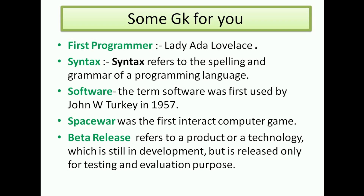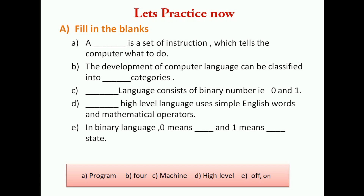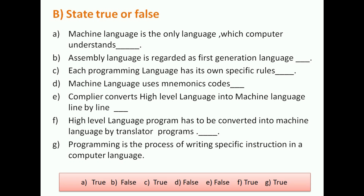Now let's do some fill-in-the-blanks. A program is a set of instructions which tells the computer what to do. Computer languages are classified into four categories. Machine language consists of binary code. High level language uses simple English words and mathematical operators. In binary language, zero means off and one means on — true. Machine language is the only language a computer understands — true. Assembly language was used in the second generation, not first — so saying it was first generation is false.